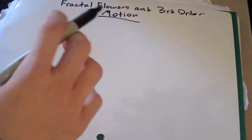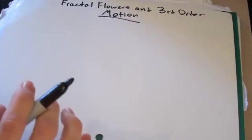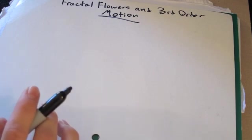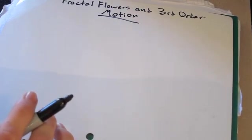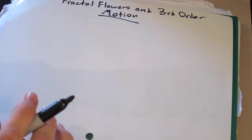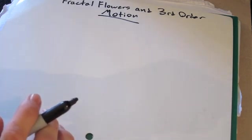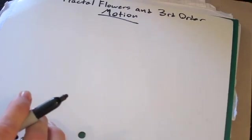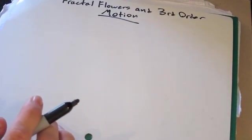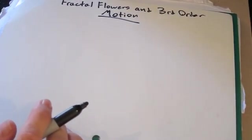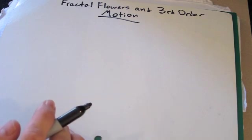Hey guys, so this is going to be my first in a series of tutorials on fractal flowers and third-order motion. In this video we're going to talk about what makes something a third-order motion, and we're going to go over some basic anti-anti-spin patterns. In future videos we'll go over hybrids involving them, so if you already know the basics of third-order motion you can go ahead and skip this video.